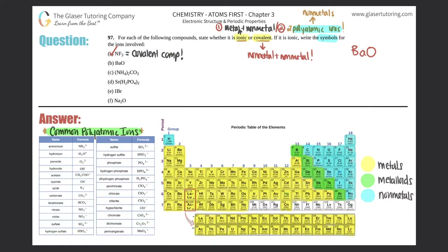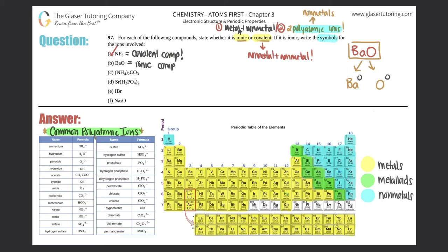For part B, we have BaO — barium and oxygen. Oxygen is a non-metal, but barium is element 56, down below — barium is a metal. As soon as you see a metal, it's going to be an ionic compound right off the bat. Now for ionic compounds, we also need to write the symbols. When this compound breaks apart into its individual ions, we want to know what charges those ions had.